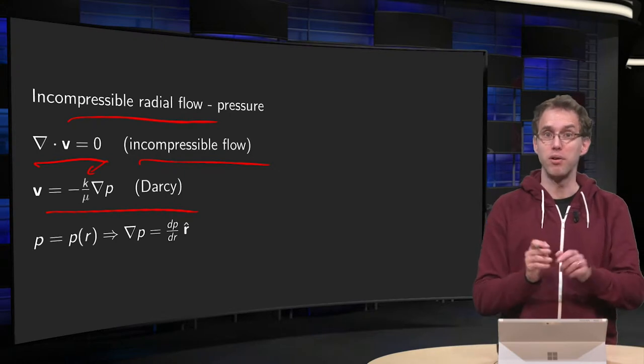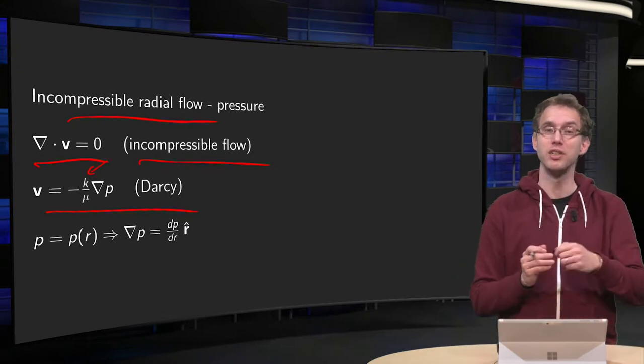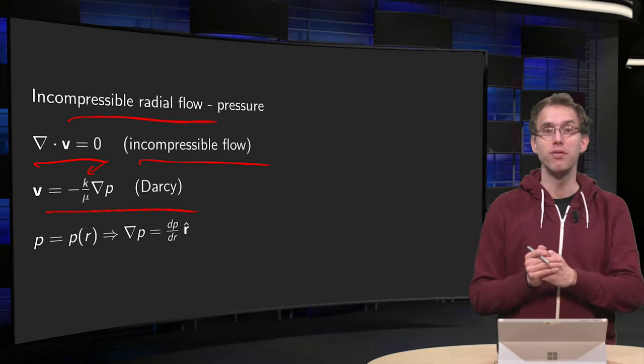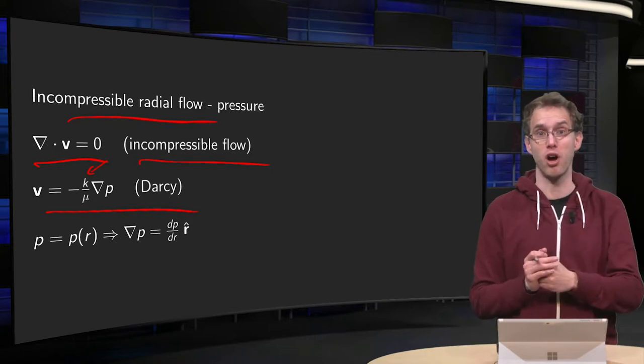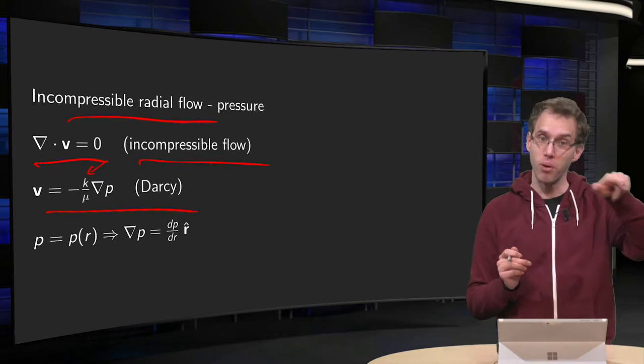Then, suppose our flow is just in the radial direction, so our problem is fully radially symmetric, which means that the pressure only depends on r and not on z or theta.